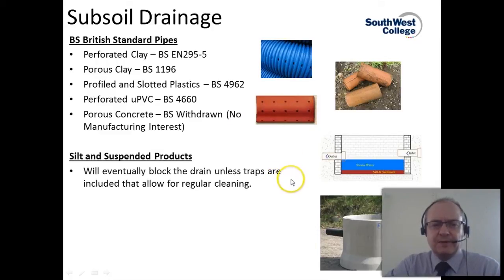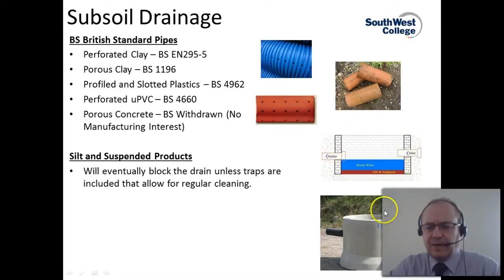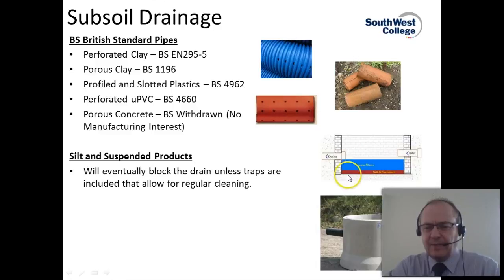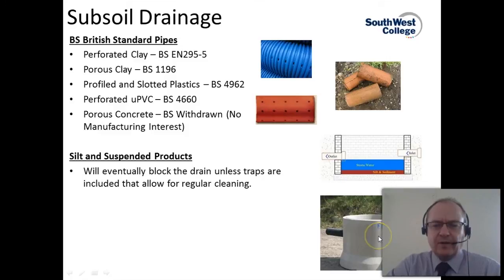Silt and suspended products within drain pipes will eventually block the drains unless traps are included that allow for regular cleaning. A drain trap — such as a prefabricated concrete one — has an inlet for storm water, where silt and sediment build up at the bottom, and once the storm water rises to a suitable level it flows out, leaving the silt and sediment behind. This type of trap stops the entire drainage system from blocking up, with silt and sediment gathered in a trap that can be easily accessed for cleaning by maintenance workers.